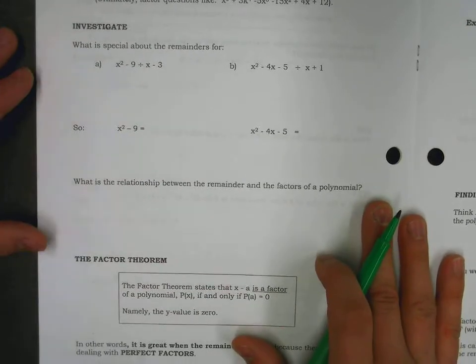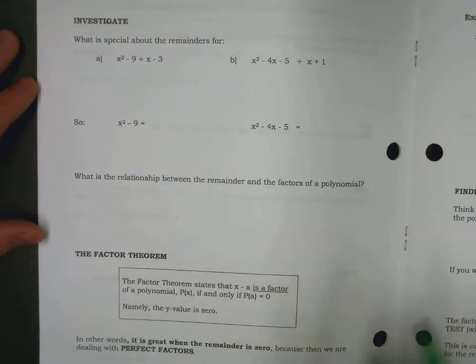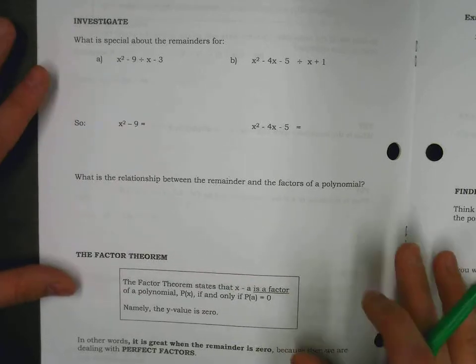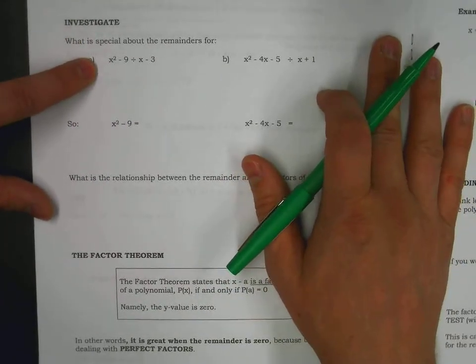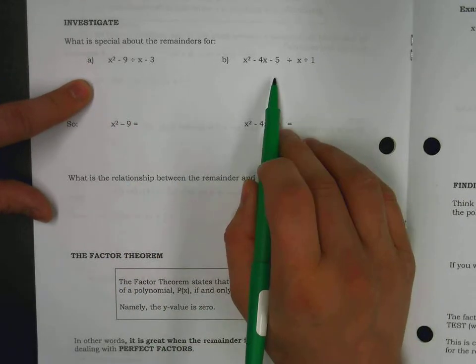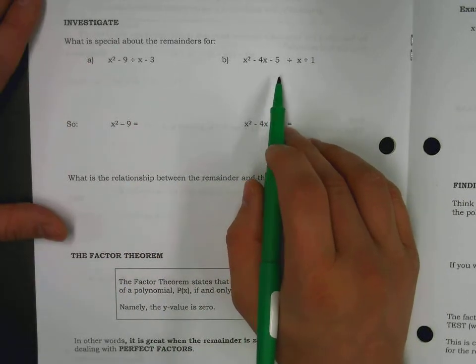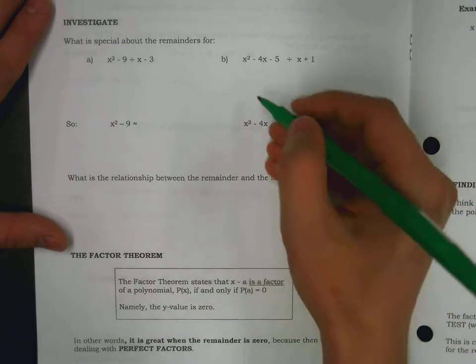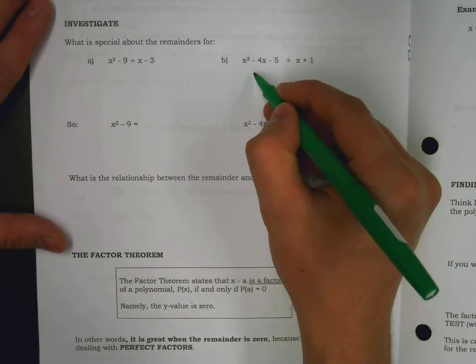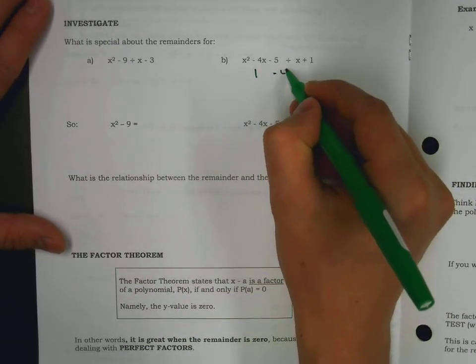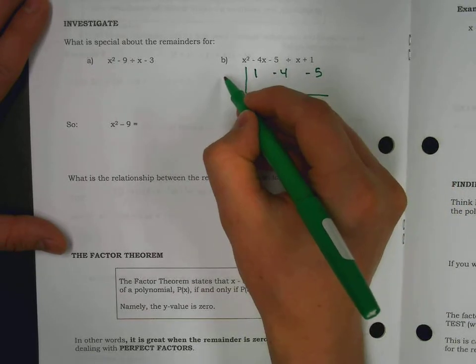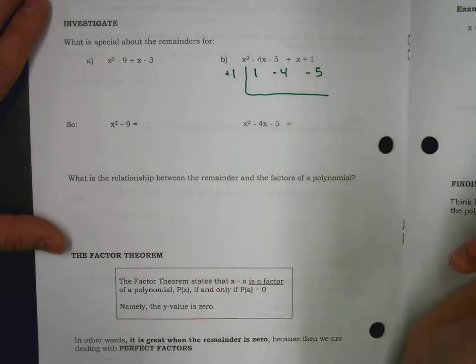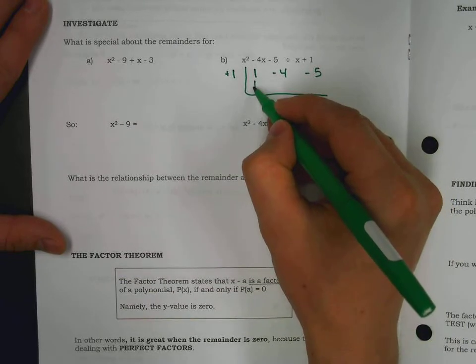As a quick investigate to get us thinking about the remainder theorem and the factor theorem, if you are asked to get the remainder for these two different examples, we can approach them in two different ways. A reminder that last day we learned how to do synthetic division, which examines the coefficients in descending order, dividing by x plus 1, dropping down the 1.